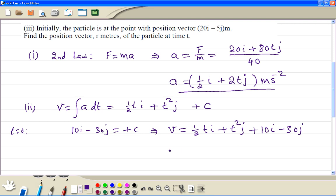Now we put the i and j parts together. So we get half t plus 10i. Then we get t squared minus 30j. Half t is 0.5t. We can write meters per second.